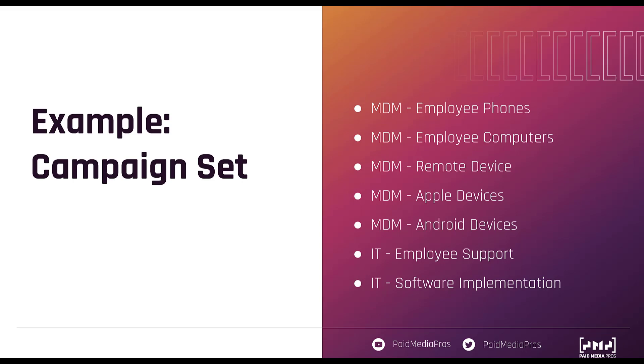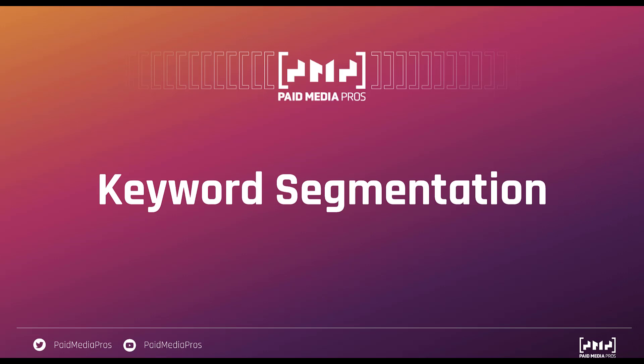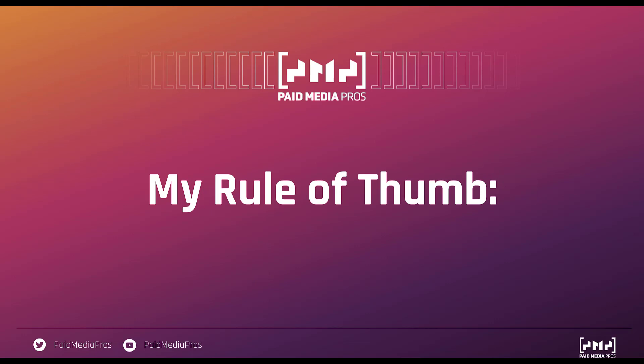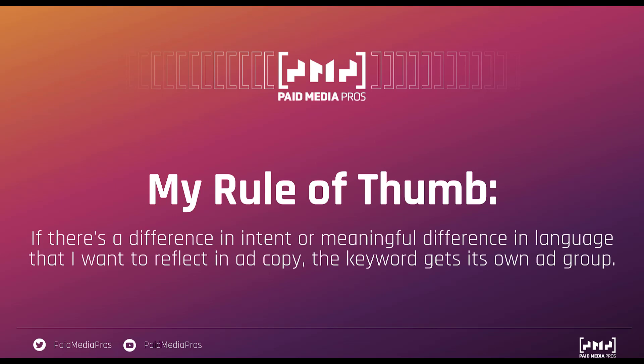Once we have campaigns broken out, we need to work on keyword segmentation, which will influence what our ad groups are going to be. My rule of thumb: if there's a difference in intent behind a keyword, or a meaningful difference in language that I want to reflect in the ad copy, the keyword gets its own ad group. If all the keywords have about the same level of intent and the different words wouldn't meaningfully change the ad copy on the search engine results page, then I'm not going to break it out into its own ad group — at that point you're just bulking up your campaigns for the sake of it. But anytime I think somebody has a different intent or I want to write different ads, that's when I start to break things out.